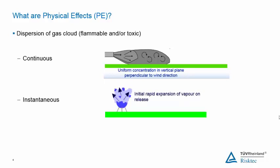Instantaneous releases are short duration — less than a few minutes — and do not continue to be fed from the source. The classical instantaneous release is the catastrophic rupture of a vessel.